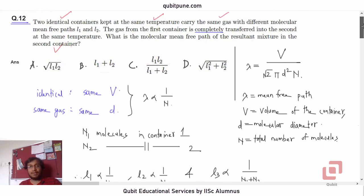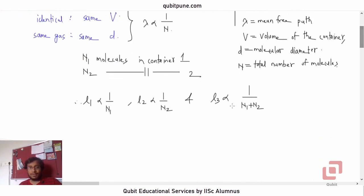L3 is our final mean free path, or L3 is the mean free path of the resultant mixture.